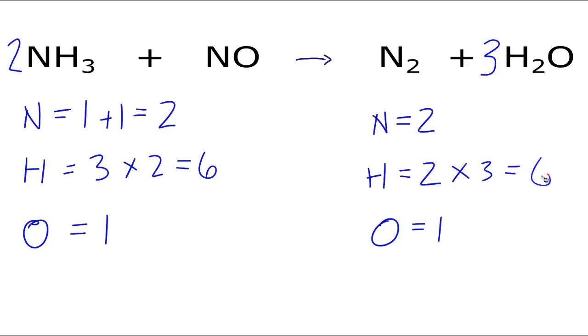And that'll give me six as well. When I look at my oxygens, now I need to update those to reflect the new coefficient. So three times the one here, I have three oxygens and only one here. So I could put a three in front of the NO and the one times the three, that would give me three. And now my oxygens are balanced.